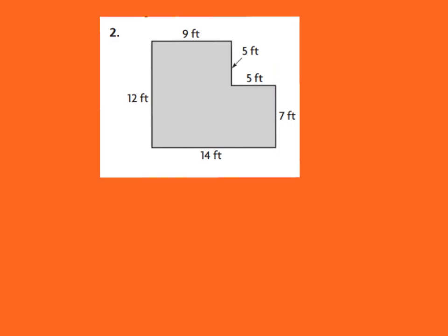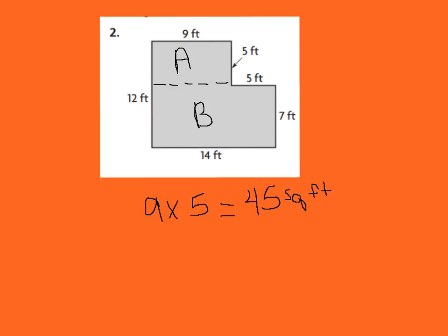Let's do number two in your GoMath book. I need to find the area of this whole shaded figure. I can split my whole big shape into two rectangles by drawing an imaginary line. I'll call them rectangle A and rectangle B. For rectangle A, I need to multiply nine, which is my base, times five, which is my height. Nine times five equals 45 square feet for rectangle A.